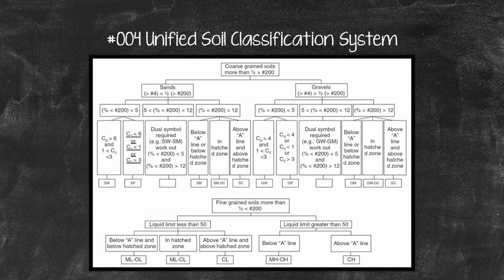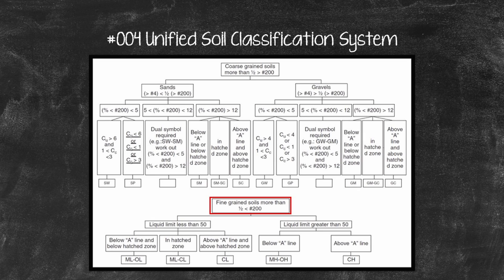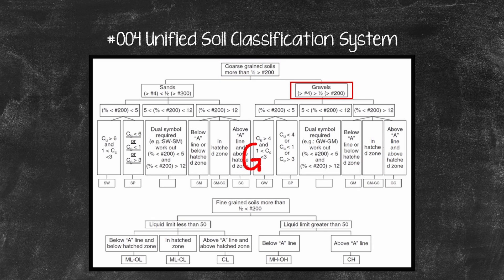The exact process for classifying a soil consists of a series of steps organized in a decision tree. The first decision is based on the percent passing the No. 200 sieve (0.075 mm opening). If the soil has more than 50% of particles by weight larger than 0.075 mm, it is a coarse-grained soil. If more than 50% by weight is smaller than 0.075 mm, it is a fine-grained soil. For coarse-grained soils, if the percent by weight of gravel-sized particles is larger than the sand-sized particles, the soil is a gravel and the first letter is G; otherwise it is a sand with first letter S.